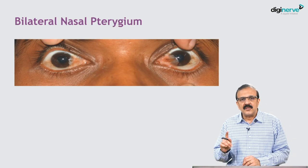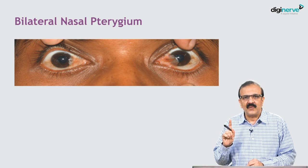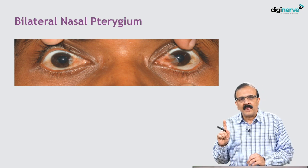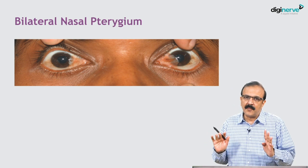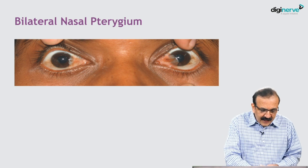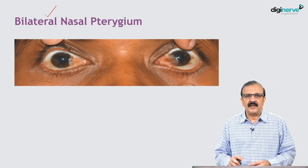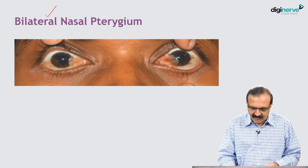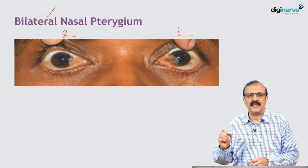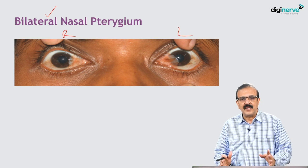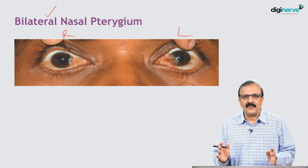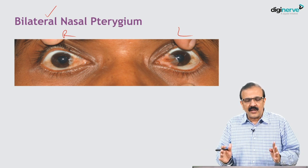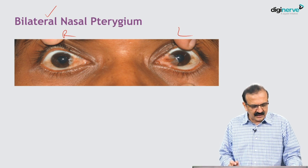We talked about double monocular pterygium — in one eye, the nasal part and the temporal part can both have pterygium. You can also have a bilateral pterygium, where pterygium happens in the nasal side of both the right eye and the left eye. A double monocular is different from a bilateral nasal pterygium, and you should know the distinction when describing in your exam.